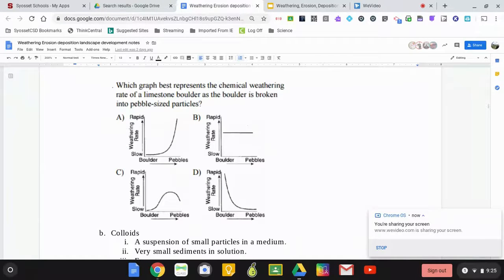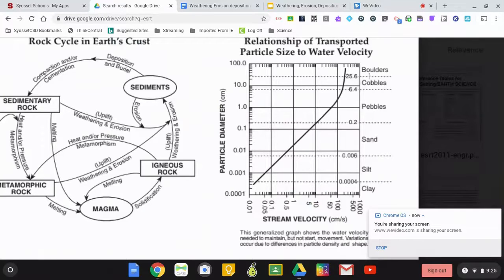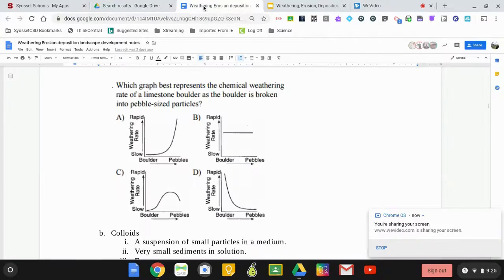Which graph best represents the chemical weathering rate of a limestone boulder as the boulder is broken into pebble-sized pieces? You're going from a larger item breaking into pebble-sized pieces. We're going to be increasing our surface area. So what's going to happen to the rate of weathering? The rate of weathering will increase. When I'm a boulder, I'd be at a slow rate of weathering. As I get to the pebble size, it would increase my rate of weathering. That would be choice A.